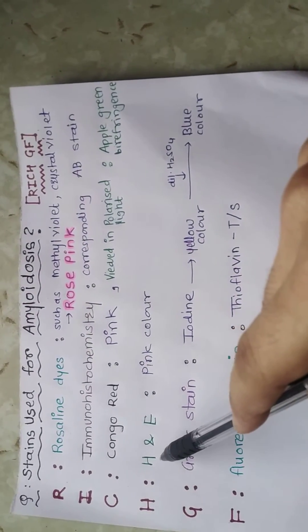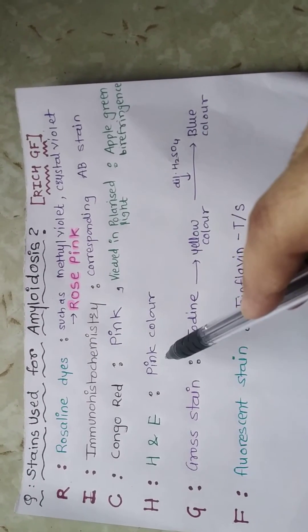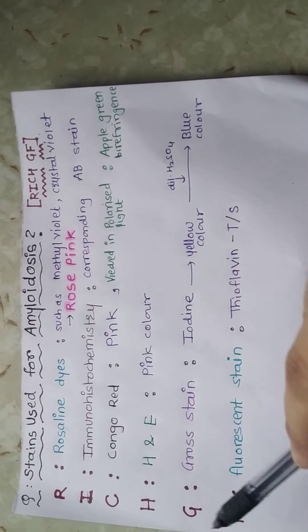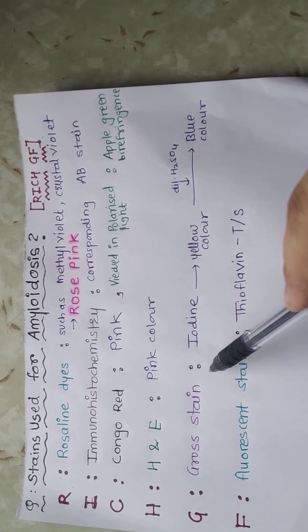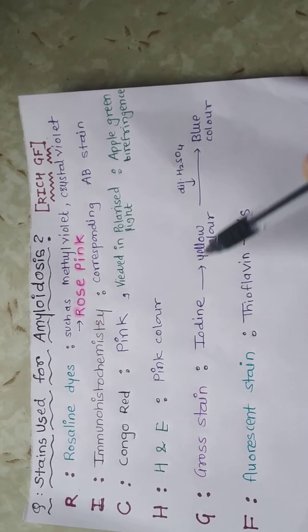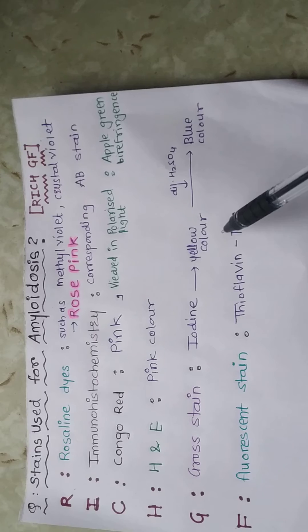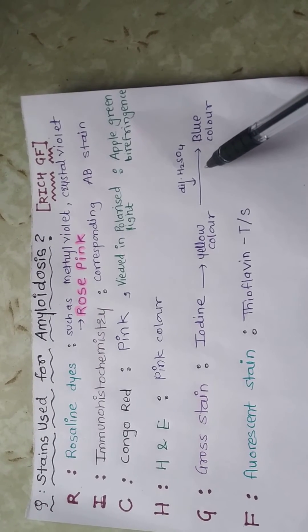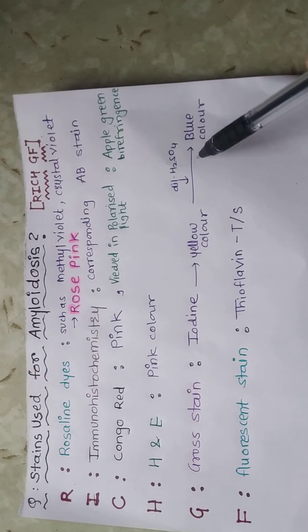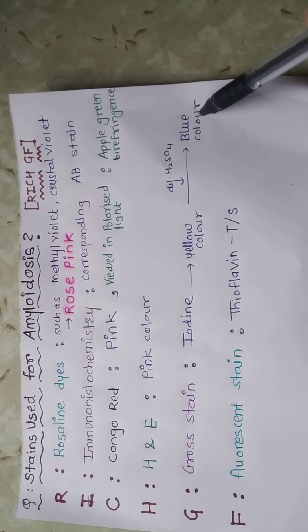H for H&E stain which imparts pink color. G for the Gross stain in which Lugol's iodine is used, which imparts yellow color. Later on, using dilute sulphuric acid, it gives blue color.